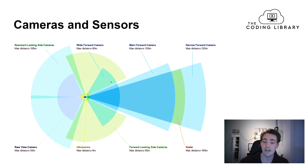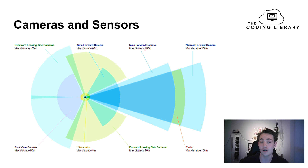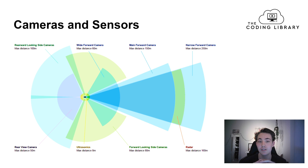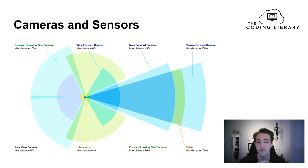Tesla has 8 cameras, with 3 cameras in the front. First it has a forward-looking wide side camera so you can see a wide view out in front of the vehicle. Then it also has a main forward camera that can see out 150 meters, and a narrow forward camera with a longer range than the main forward camera. The main camera used for driving is the main forward camera, while the narrow forward camera is used for longer distances and the wide forward camera for a wider field of view. All these cameras are put together into one sequential frame.